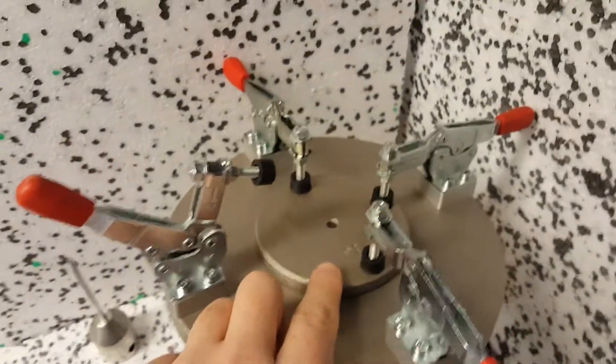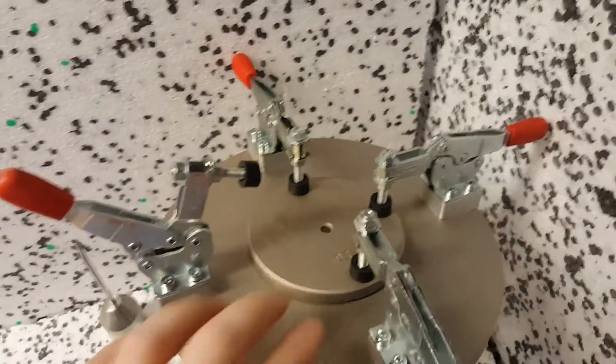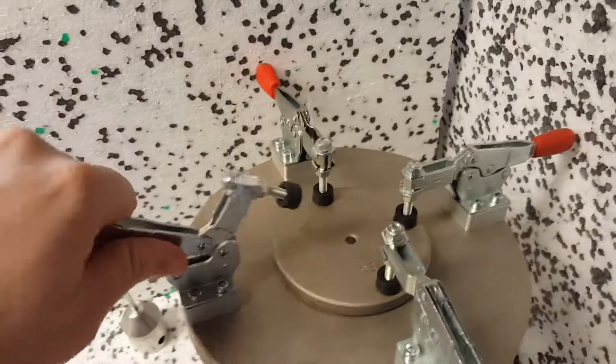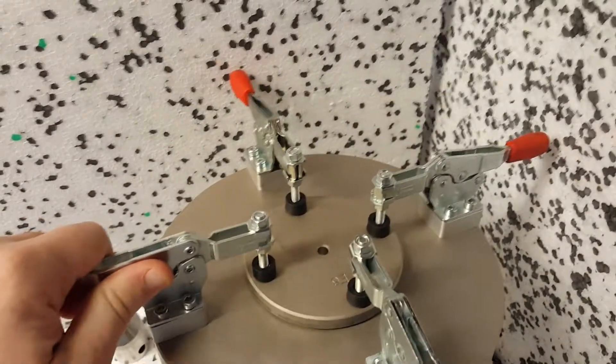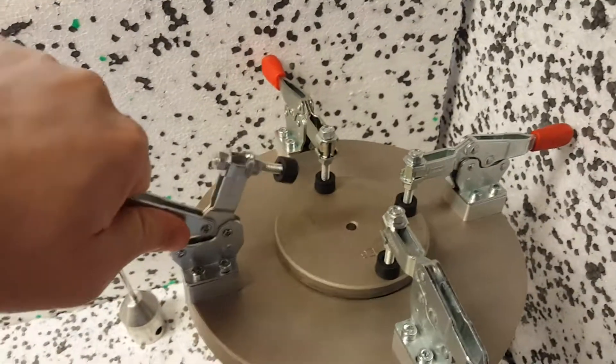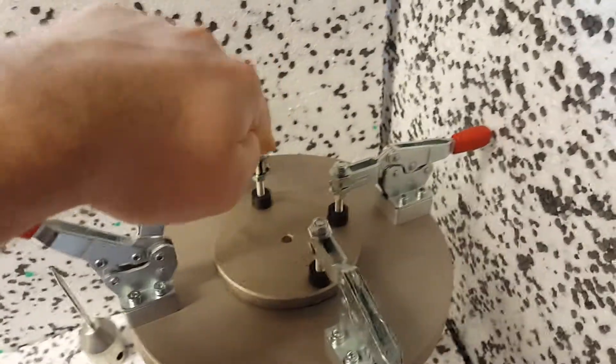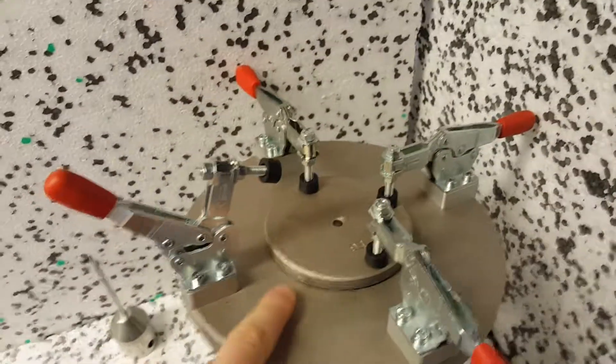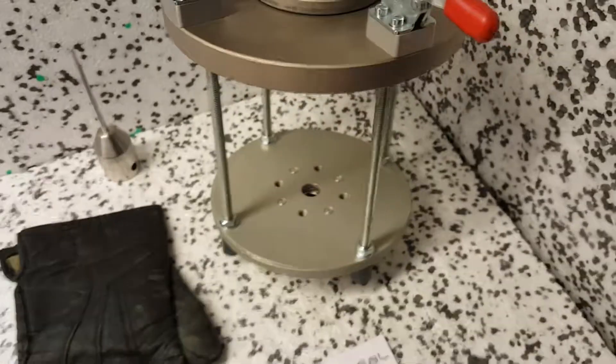You have this center plate here. You would mount the sample underneath there and then push that plate down with these quick clamps. You would clamp each one of these four down to mount your sample and then this fixture would mount onto your universal testing machine.